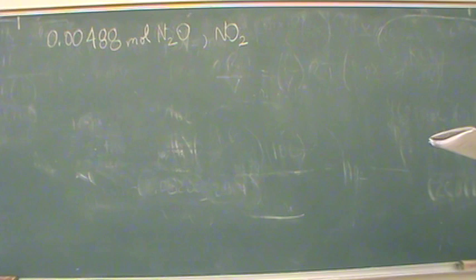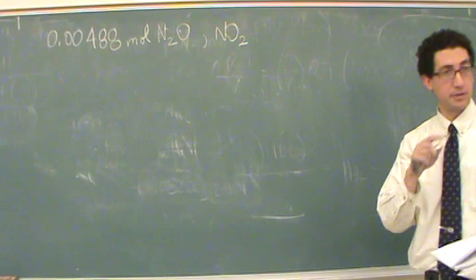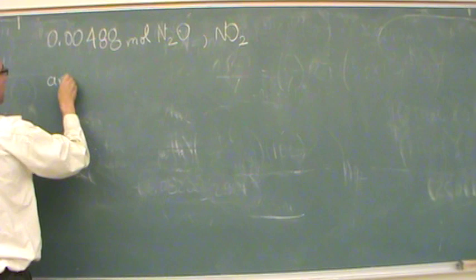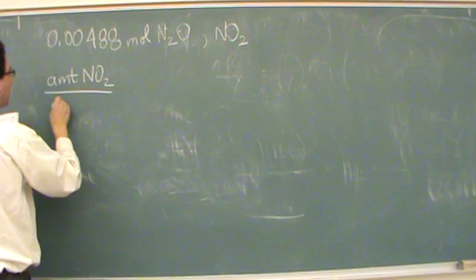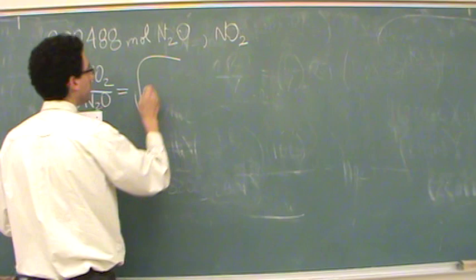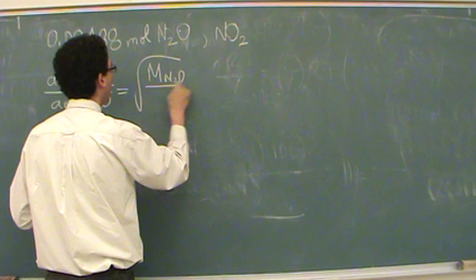So this is about amount. Amount is one of those that we invert. So you would say, amount of NO2 divided by the amount of N2O equals the square root of the inverse of that. So the molar mass of N2O over the molar mass of NO2.